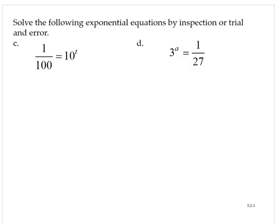1 over 100 is equal to 10 to the t. Well, so 10 to what power gives me 1 over 100? Well, I remember that 10 to the first is 10, and 10 to the second is equal to 100. So we might be tempted to say 2, but it doesn't ask us for 100. It asks us for 1 over 100.